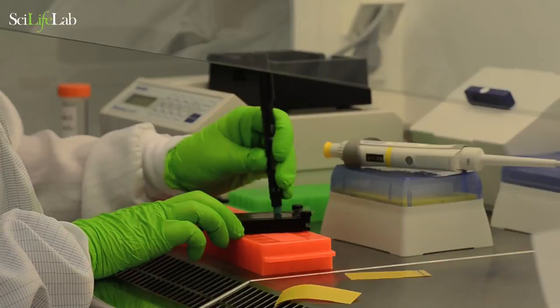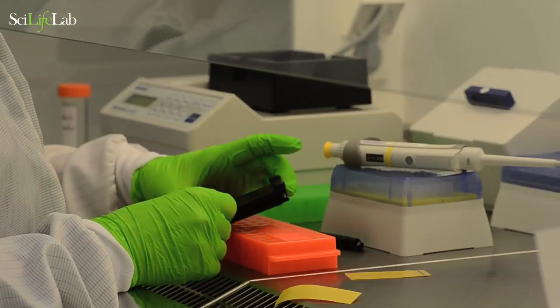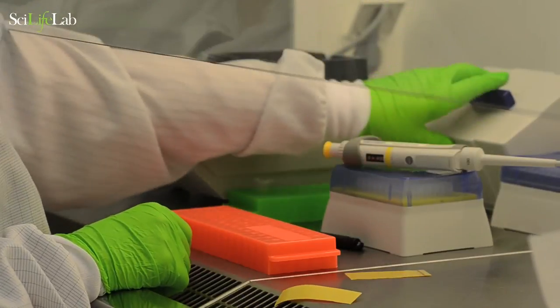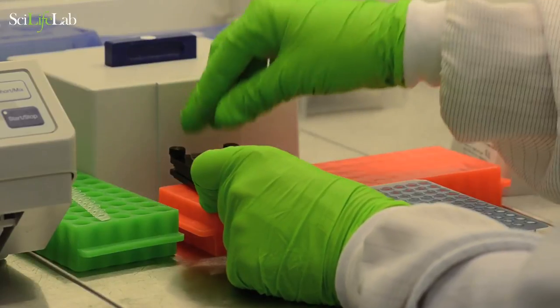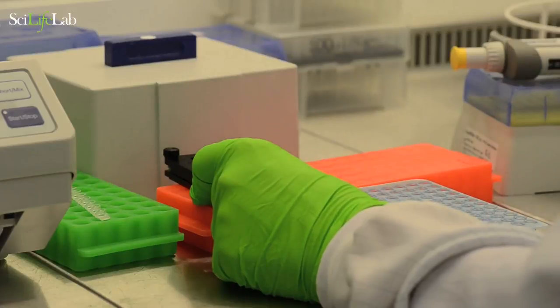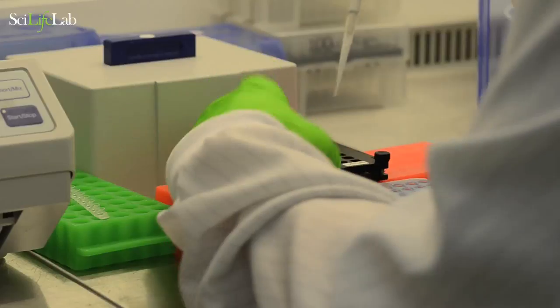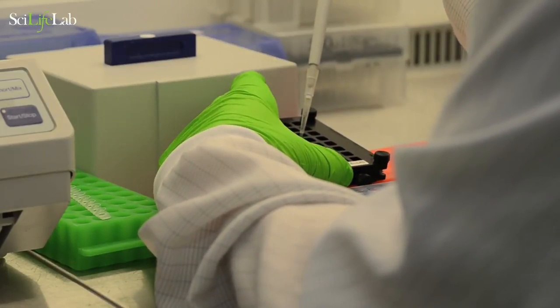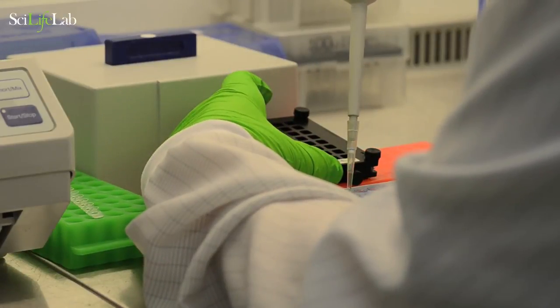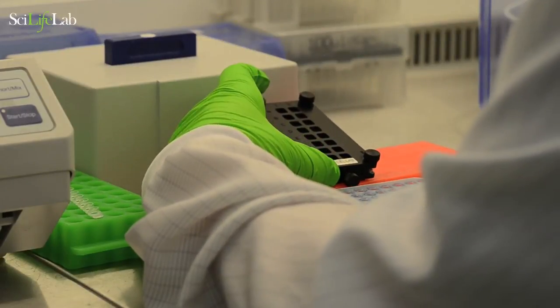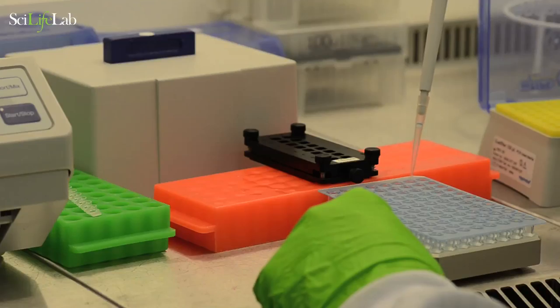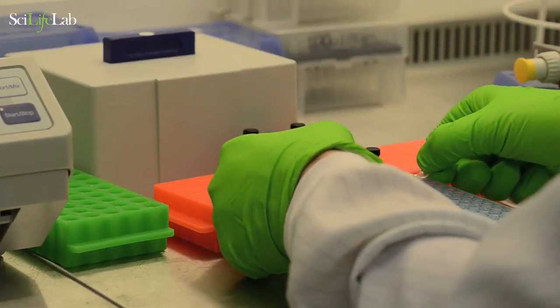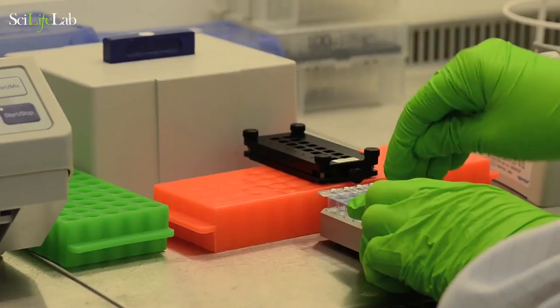Incubate for 2 hours at 37 degrees with interval shaking. Remove the seal. Take up 65 microliters and transfer either to a plate or to 0.2 milliliter tubes. Seal the samples. Samples can be frozen at minus 20 for later processing or taken directly onto library preparation.